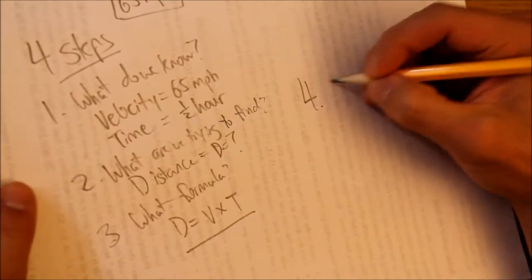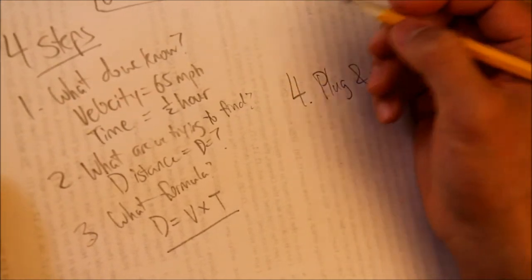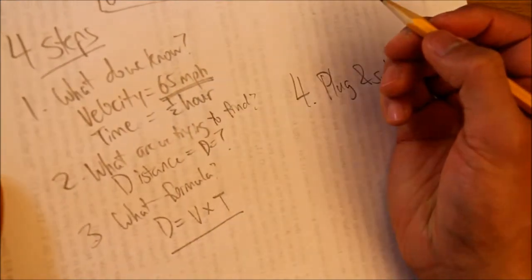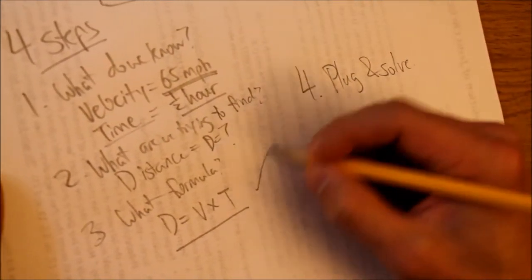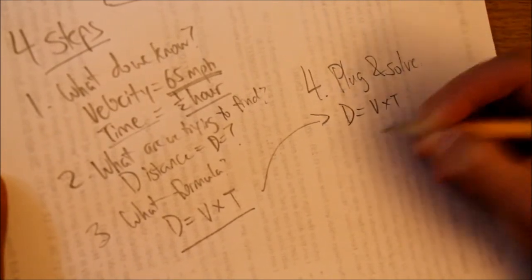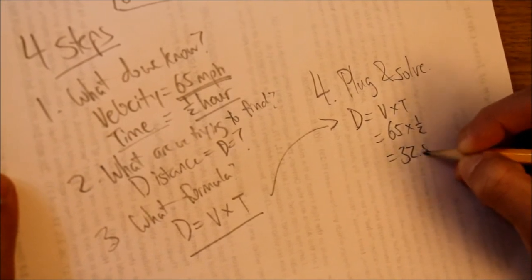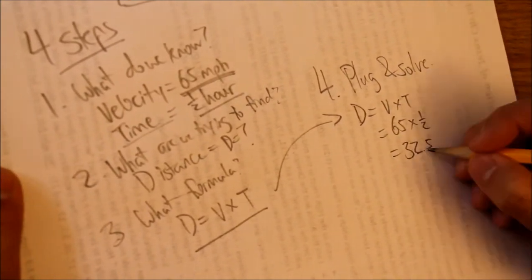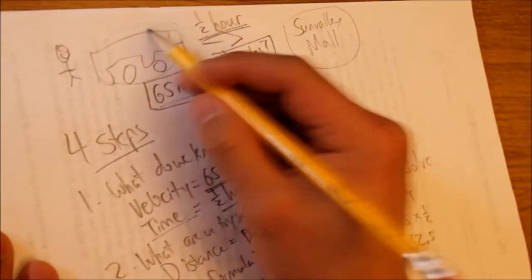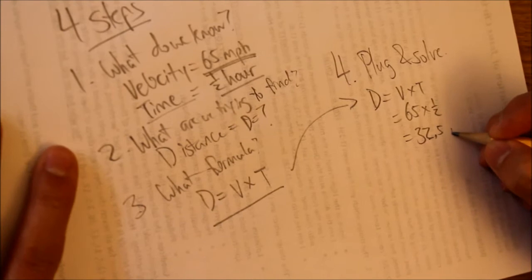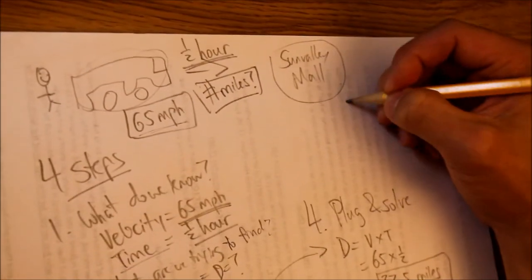Step four: we plug in our numbers and solve. Jimmy's car velocity is 65 miles per hour and the time traveled is half an hour. Using our calculator, 65 times one-half equals 32.5. So after driving 65 miles per hour for half an hour, Jimmy's car has gone 32 and a half miles. Sun Valley Mall is 35 miles away, so Jimmy is almost there.